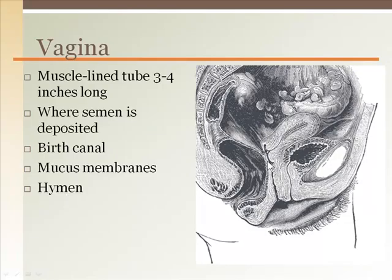The wall of the vagina is lined with folds or rugae and can enlarge to accommodate an erect penis or the passage of a baby, which is why it is also known as the birth canal. It is lined with mucous membranes that secrete acidic substances to prevent infection. The hymen is a fold of skin that partially blocks the entrance to the vagina. The hymen is ruptured initially with intercourse but may have been previously ruptured due to physical activity. Hymen was the mythical Greek god of marriage.